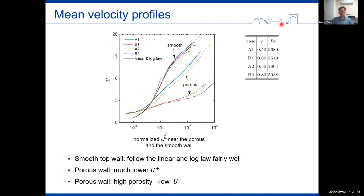Then let's check the DNS simulation results. This figure shows normalized velocities near the porous wall and the smooth wall. As we can see, all the velocities near the smooth wall can follow the linear and the log-law very well, regardless of their difference in porosities and Reynolds numbers. While for the porous wall, a much lower magnitude of velocity is found, and the velocity also decreases with the increasing porosity.